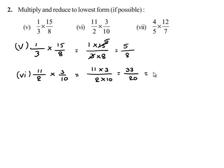This can be written as 1 and 13 by 20 in the mixed fraction form. For the seventh bit, that is 4 upon 5 multiplied by 12 upon 7. This can be written as 4 multiplied by 12 upon 5 multiplied by 7.